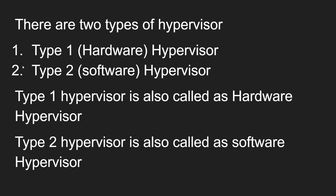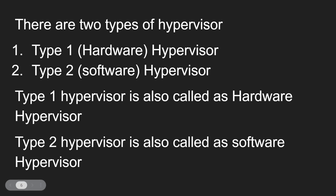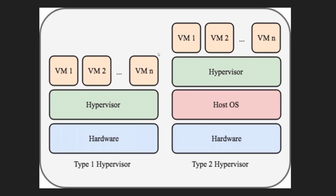There are two types of hypervisors available: Type 1, also called a hardware hypervisor, and Type 2, also called a software hypervisor. Looking at the diagram, on the left-hand side you can see the Type 1 hypervisor and on the right-hand side the Type 2 hypervisor.